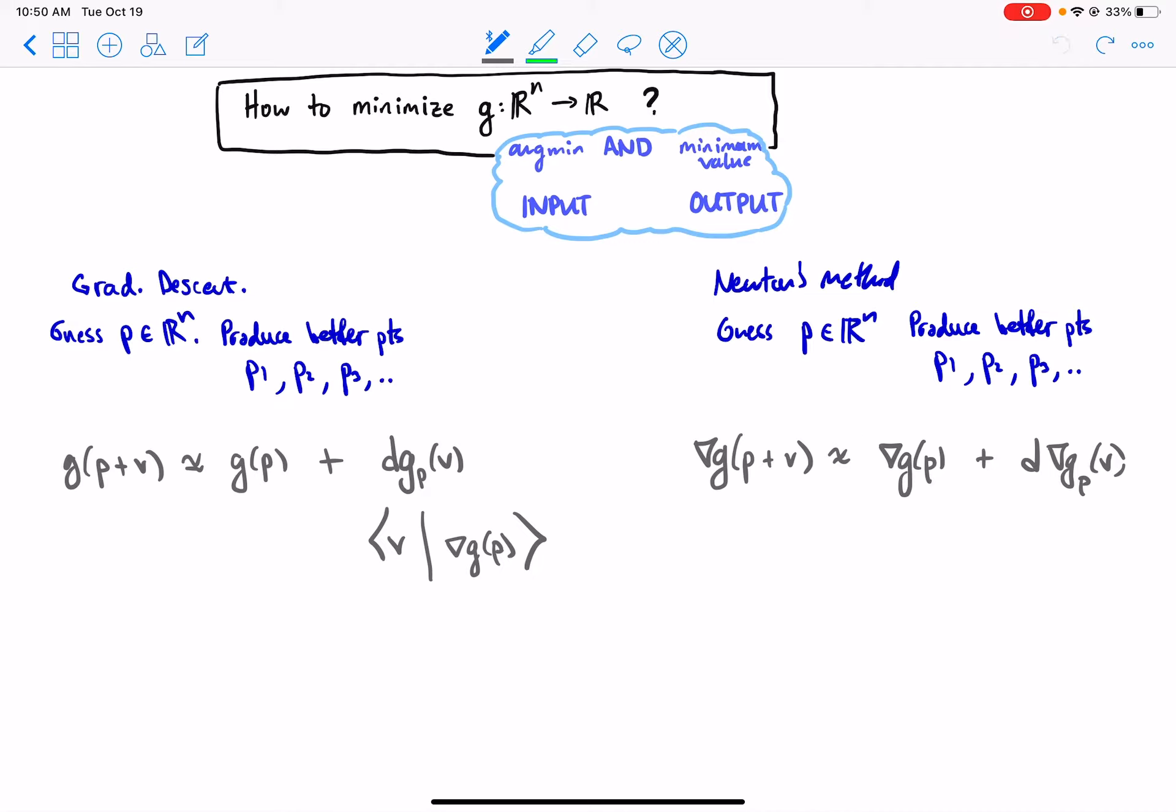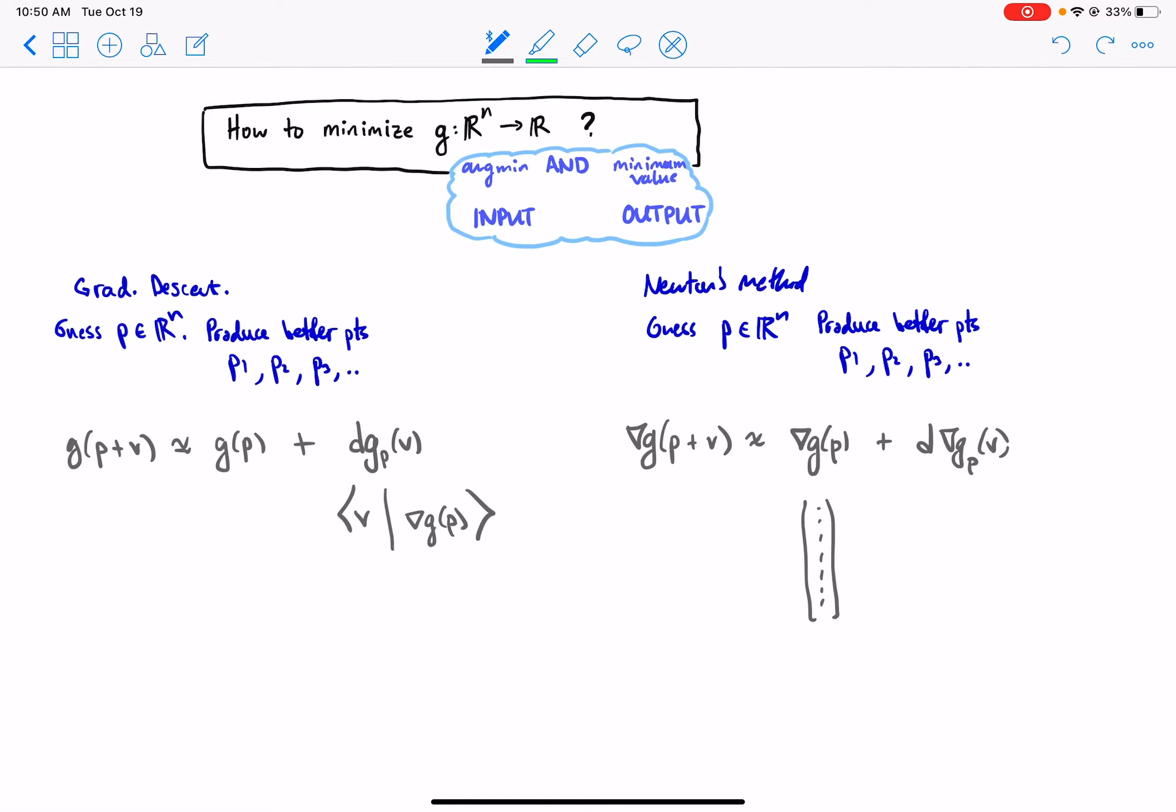Well, we have to compute the gradient for Newton's method too. It's some actual vector with numbers when we plug in at the point P, we get the output vector. But then we're actually going to linearize this whole gradient, which means we're going to get some linear combination of the columns of the Jacobian matrix of this map. The gradient map will go from R^n back to R^n, and so its derivative is not a dot product. Its derivative is some linear combination.